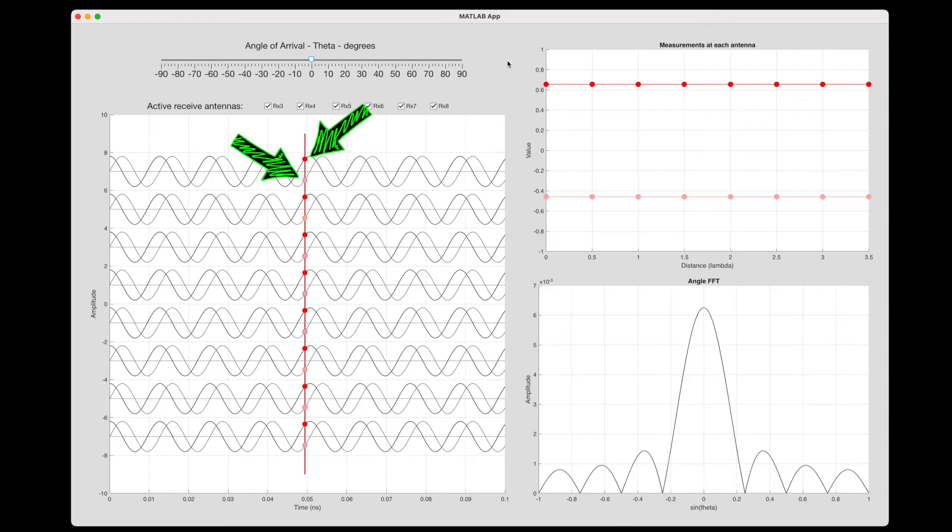And this plot up in the corner is just plotting those IQ values over distance. Remember each antenna is a distance of half a wavelength away, so the whole array is three and a half wavelengths long. Now, currently the angle to the object is zero degrees, and so they're all receiving the exact same signal. At the top I have a slider that lets me change theta, and therefore delay each of the signals into the eight antennas accordingly.